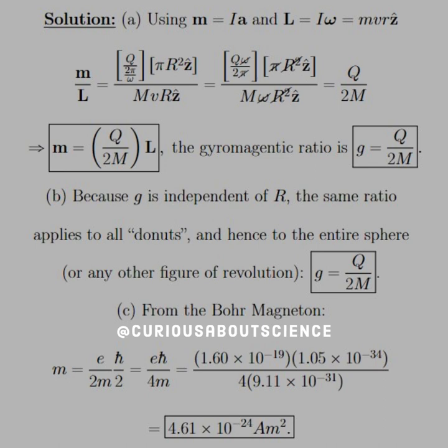All right, so if we take the ratio, which is what we want, we see that the current is Q divided by the time of revolution, which is 2π divided by ω. The vector area is πr² ẑ.